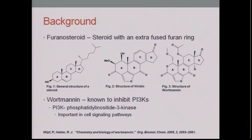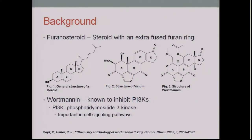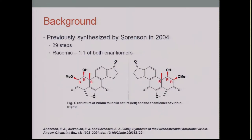The bioactivity of viridin is still unknown, however we believe it can behave similarly to other members of the furanosteroid family, such as Wortmannin. Wortmannin is known to inhibit PI3Ks — phosphatidylinositide 3-kinase — which are important in cell signaling pathways. In the presence of cancer cells, Wortmannin covalently binds to the active site of the enzyme, prohibiting PI3Ks from functioning normally and preventing cancer cells from entering cell signaling pathways. Looking at figures 2 and 3, the structures of viridin and Wortmannin are very similar, suggesting viridin can similarly covalently bind to the active site of PI3Ks.